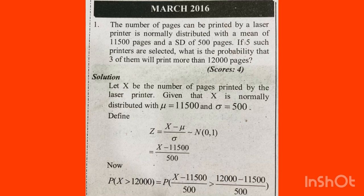Let x be the number of pages printed by the laser printer. Given that x is normally distributed with mu equal to 11,500 and sigma equal to 500, we apply z equal to x minus mu divided by sigma, which follows N(0,1). So z equals x minus 11,500 divided by 500.